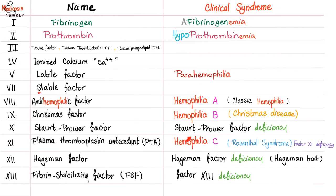Some modern textbooks have dropped the name hemophilia C and no longer call it hemophilia C — they just call it factor 11 deficiency. They wanted to convey that hemophilia is always X-linked, and since factor 11 deficiency is autosomal recessive, not X-linked recessive, they dropped the name. Similarly, factor 10 deficiency is not a hemophilia — it's just a factor deficiency, and it's also autosomal recessive. So when you say hemophilia A or B, it's X-linked recessive; any other factor deficiency is probably autosomal recessive.